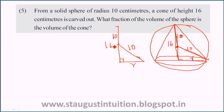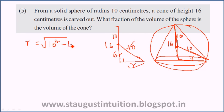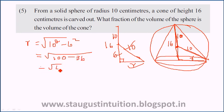Then we can find the radius of the cone. Radius equals the square root of hypotenuse squared minus base squared, that is √(10² − 6²) = √(100 − 36) = √64 = 8. So the radius of the cone is 8 centimeters.